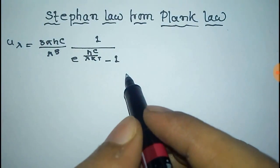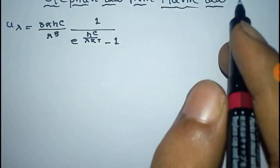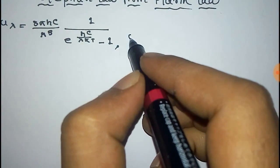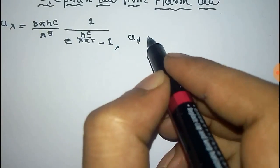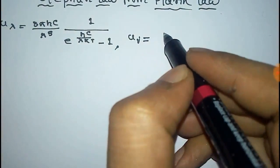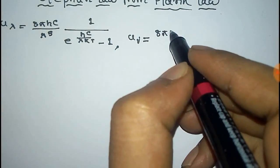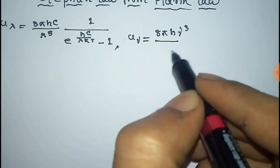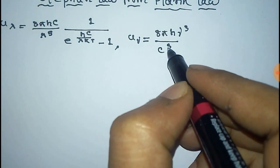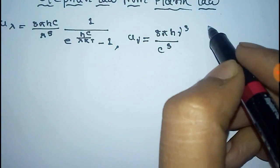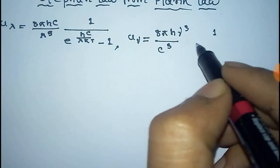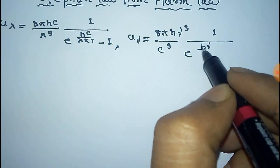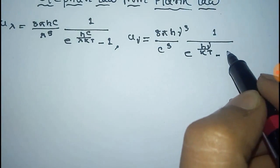And in terms of frequency, this relation becomes U_ν, that is equal to (8πhν³ / c³) into (1 / (e^(hν/kT) − 1)), where ν is the frequency.